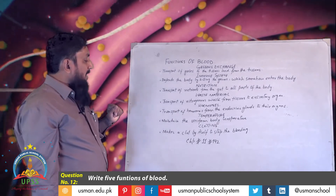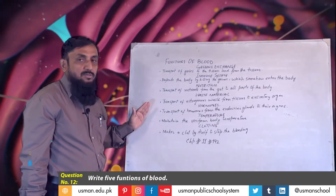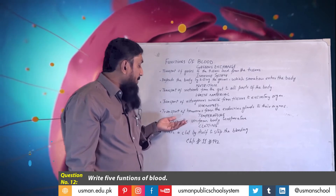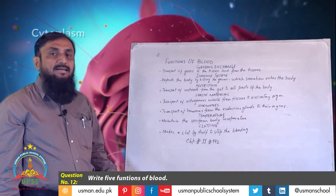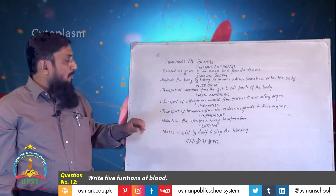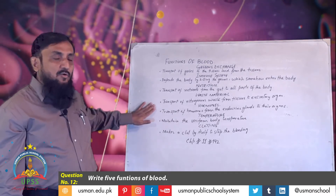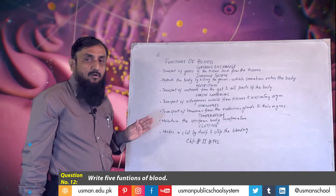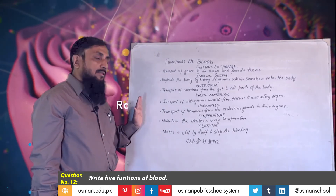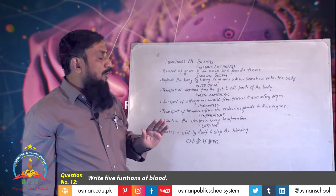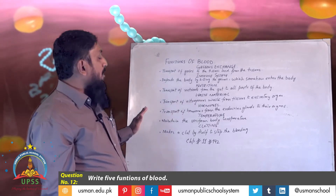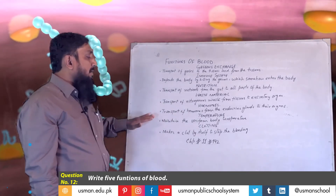Another function of blood is the transport of hormones. Hormones are chemical messengers that help to regulate our body. Endocrine glands such as the thyroid gland, adrenal gland, testes, and ovaries all secrete hormones. These hormones are transported through the blood to the required target organs.